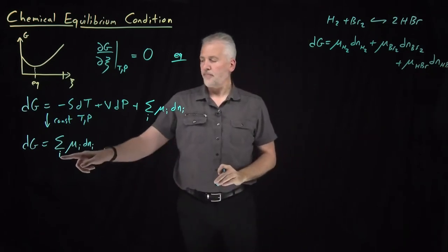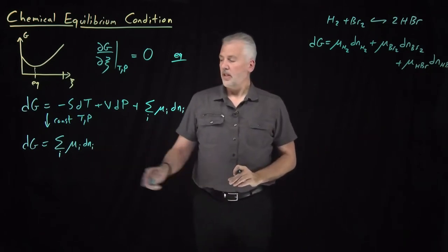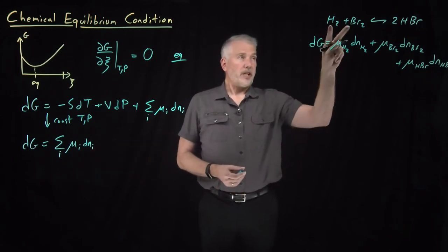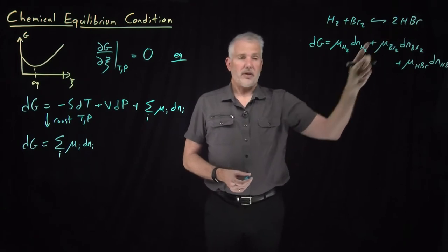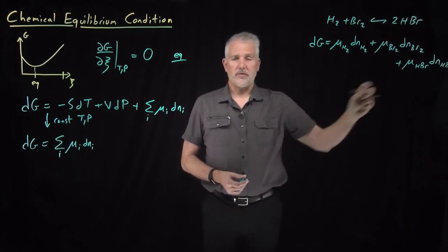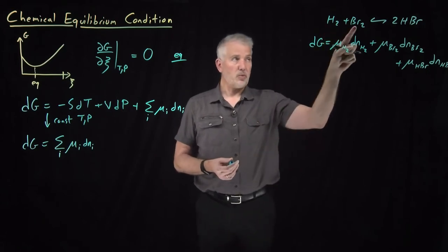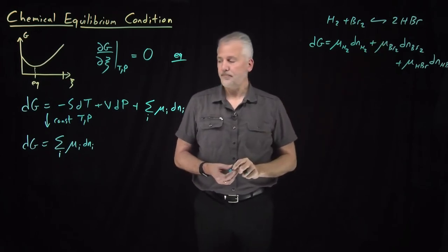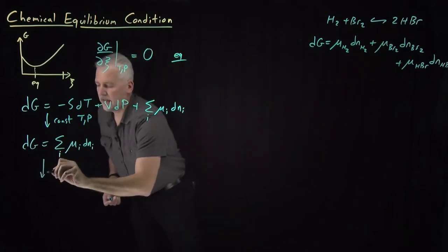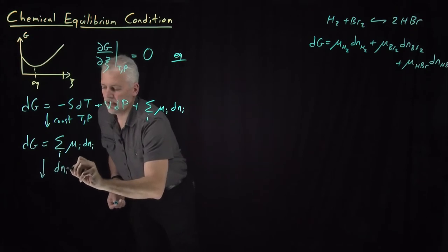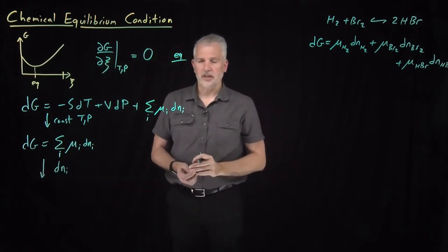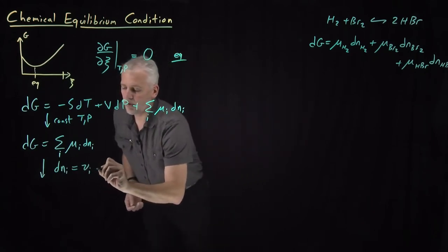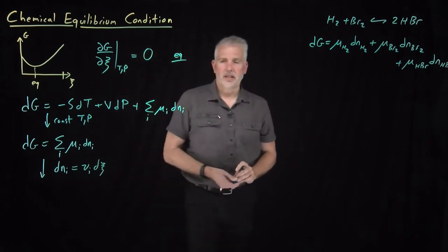That's just a literal interpretation of what this equation says. But of course, when I undergo a chemical reaction — H₂ and Br₂ forming HBr — the change in moles of H₂, change in moles of Br₂, change in moles of HBr are all coupled to one another. I lose one mole of each of the reactants each time I gain two moles of product. That's encapsulated in the fact that the change in number of moles is the stoichiometric coefficient times the change in the extent of reaction.